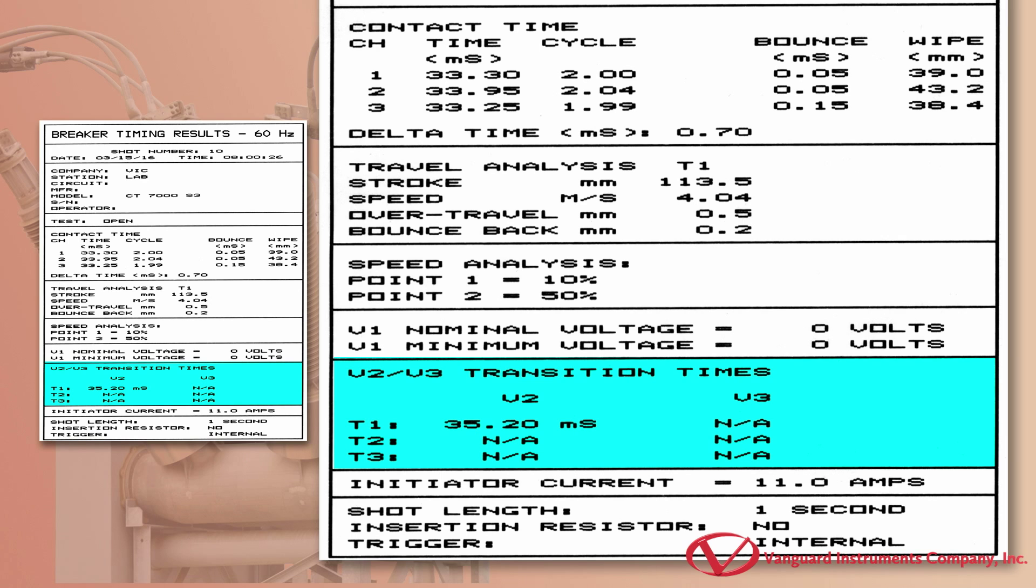In this example, the CT7000S3 detected one voltage transition on the V2 channel at 35.2 milliseconds.